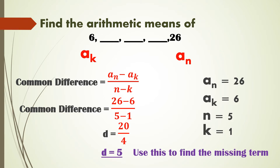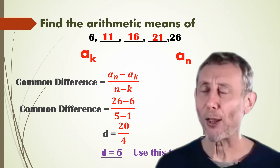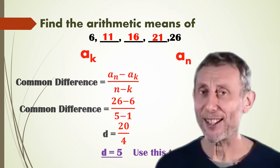Using a common difference of 5: 6 + 5 = 11, 11 + 5 = 16, 16 + 5 = 21. So the three missing arithmetic means between 6 and 26 are 11, 16, and 21.